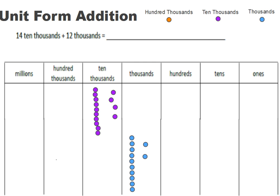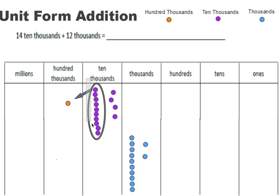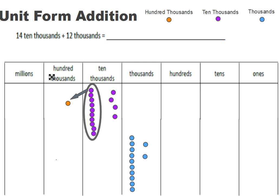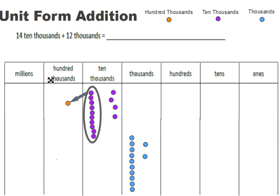Now I need to add this together, but before I can do that I want to bundle these ten thousands, since I have ten of them. I can put a lasso around it and trade this in for one chip in the next column. The chip in this column is going to be worth a hundred thousand. So this becomes one hundred thousand — ten ten-thousands is one hundred thousand.